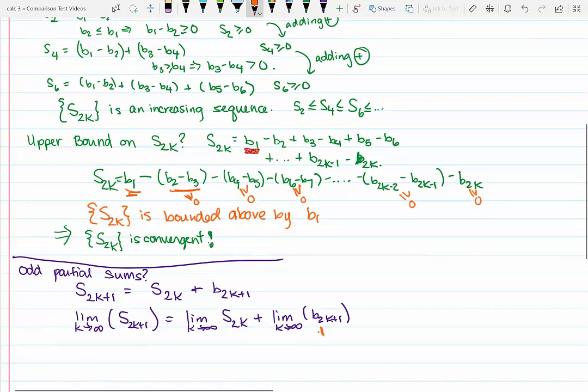So because of that, I have that this is approaching 0, and therefore I'm getting that the limit of the odd numbered partial sums must be equal to the limit of the even numbered partial sums. And I know this limit, even one exists, because we proved it was a monotonic and bounded series, or sequence.